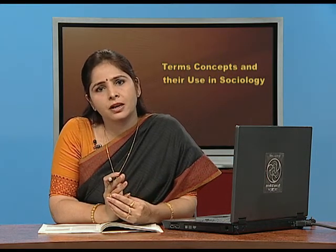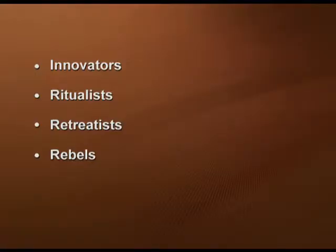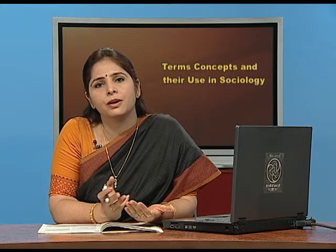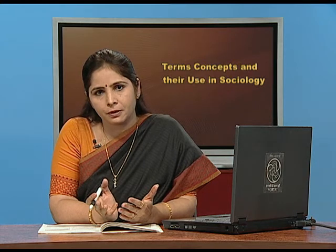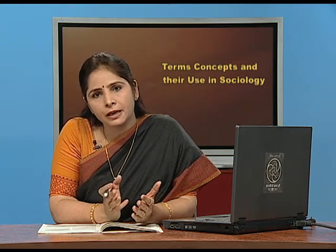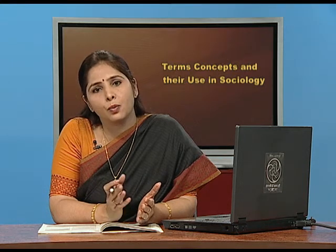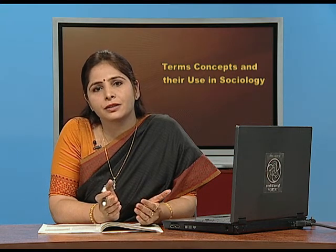This theory sets out four categories of people who adopt deviant behaviors — innovators, ritualists, retreatists, and rebels. Before discussing these, there are also conformists — people who believe in the goals set by society and strongly believe in the approved means by which those goals are achieved.